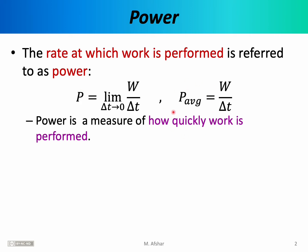Average power is a little easier to understand. If you perform work W in time delta T, then the average power is work divided by delta T. So if you perform a hundred joules of work in 10 seconds, then your power output is simply 10 joules per second.